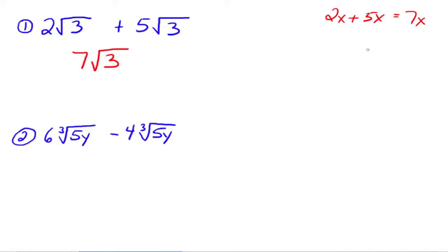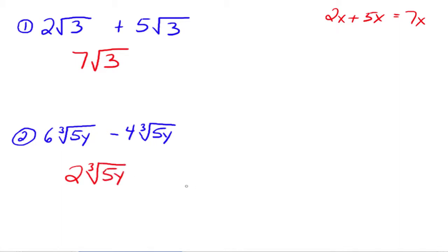Like radicals — just like adding like terms. So down here on number 2, we've got 6 times the cube root of 5y minus 4 times the cube root of 5y. The radical parts for both of these expressions are exactly the same, so we can add up the coefficients: 6 minus 4 gives 2, and then we're multiplying that times the cube root of 5y.